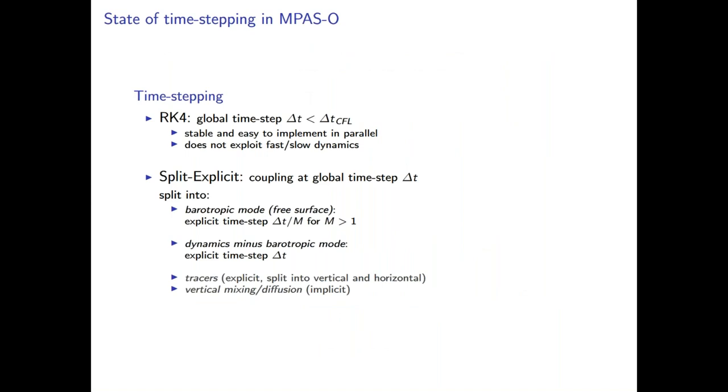The first one is RK4 which uses a global time step, but as we've seen before it's subject to a CFL, but it has certain advantages. But one big disadvantage for the global ocean is it does not exploit the splitting between fast and slow dynamics. So even on a global grid, it will be subject to a restrictive CFL, a uniform grid.